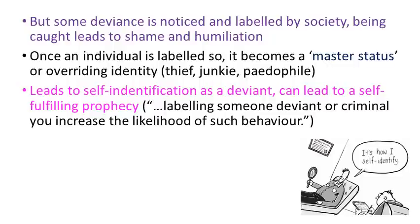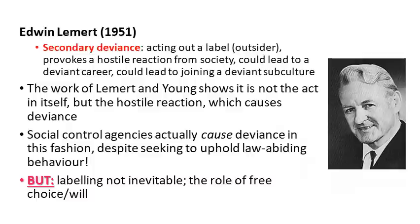Some deviance is noticed and labelled by society, and being caught leads to shame and humiliation. Once an individual is labelled, it can change what is known as their master status — this is how they view themselves, their identity. As a result, they no longer see themselves as a good citizen, a member of a family unit, a good friend, or a student. They now see themselves as maybe a thief, a junkie, a paedophile, and so on. This leads to self-identification as a deviant and can lead again to the self-fulfilling prophecy — labelling someone deviant or criminal increases the likelihood of such behaviour.